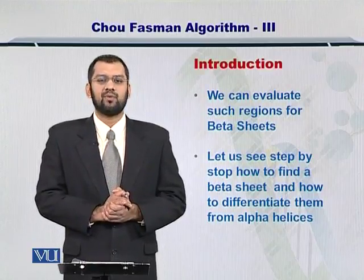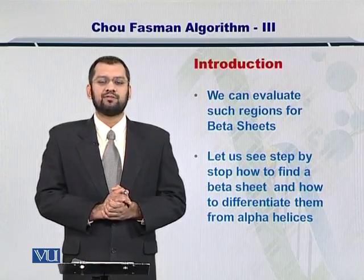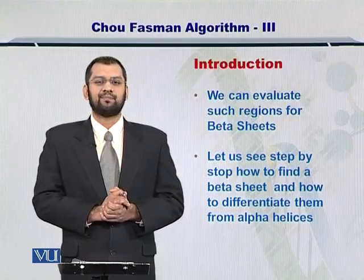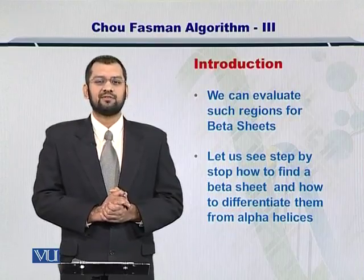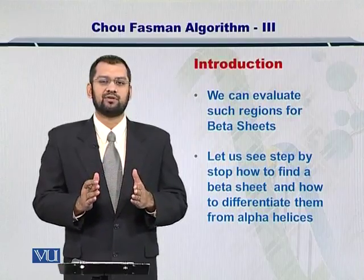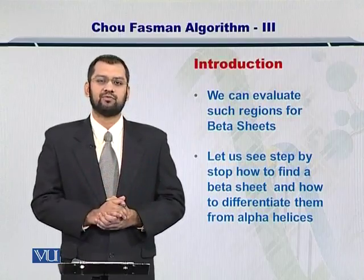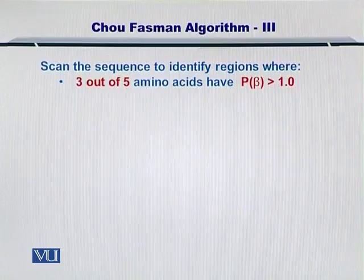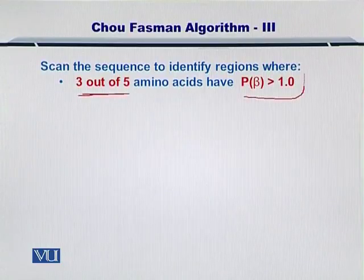Towards that, we can evaluate such regions step by step. As the next step in the Chou-Fasman algorithm, you evaluate these amino acid regions for formation of a beta sheet. To start, you continue to scan your sequence to identify the regions where 3 out of 5 amino acids have a propensity for formation of a beta sheet greater than 1.